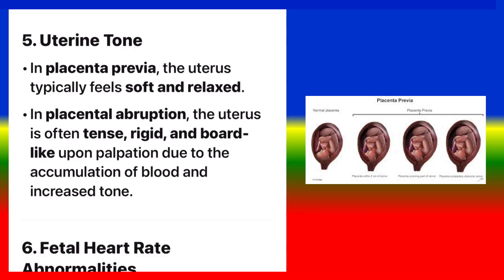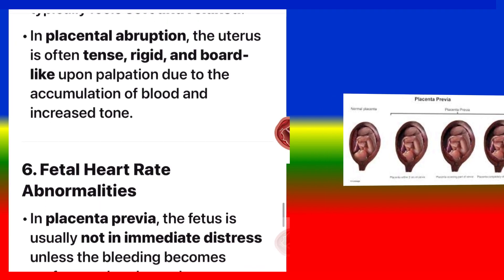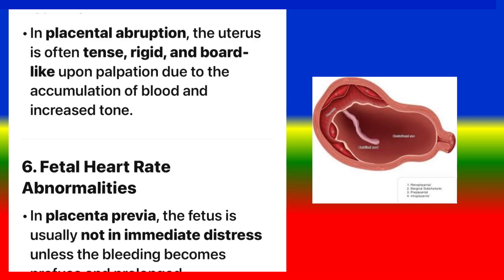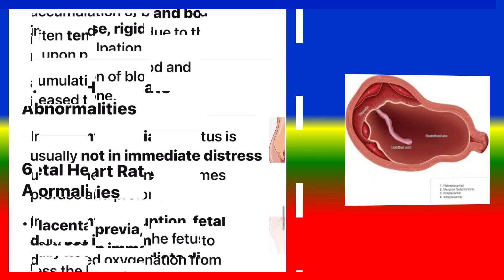Uterine tone. In placenta previa, the uterus typically feels soft and relaxed. In placental abruption, the uterus is often tense, rigid, and board-like upon palpation due to the accumulation of blood and increased tone.